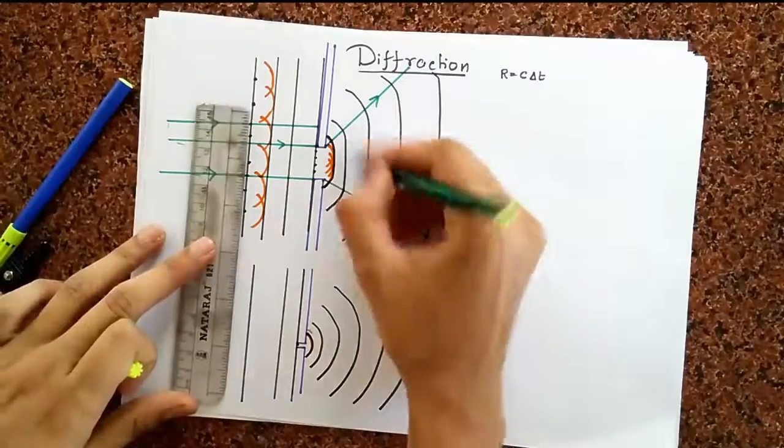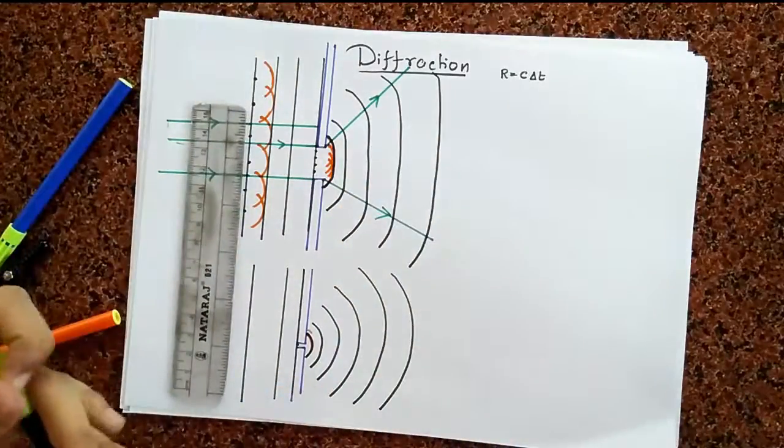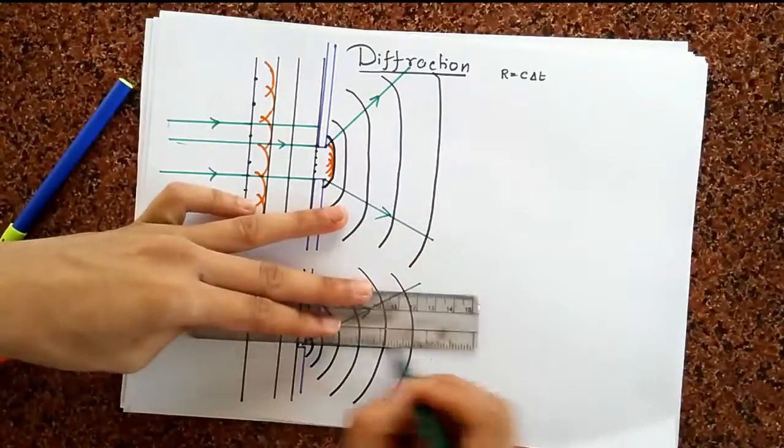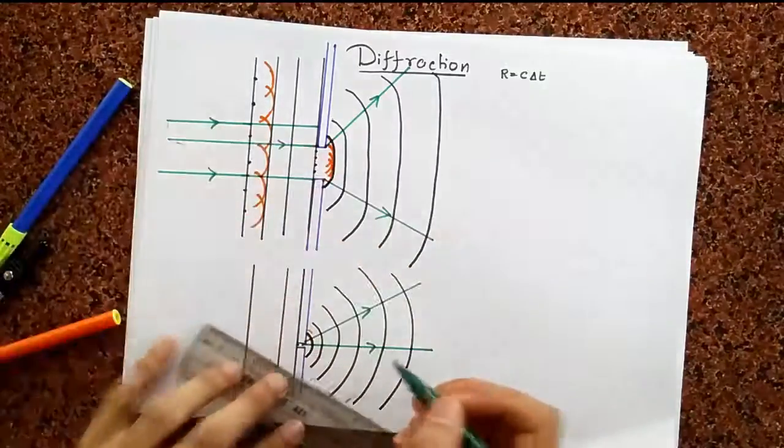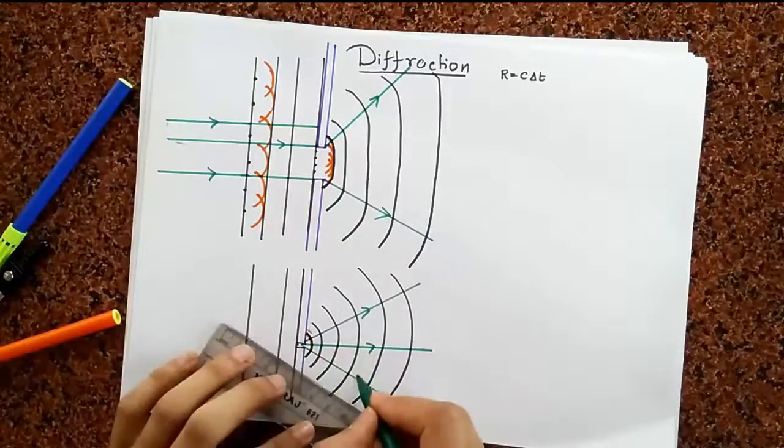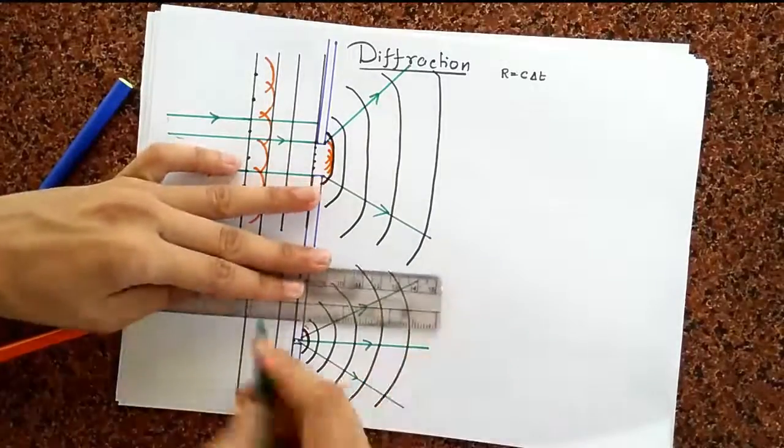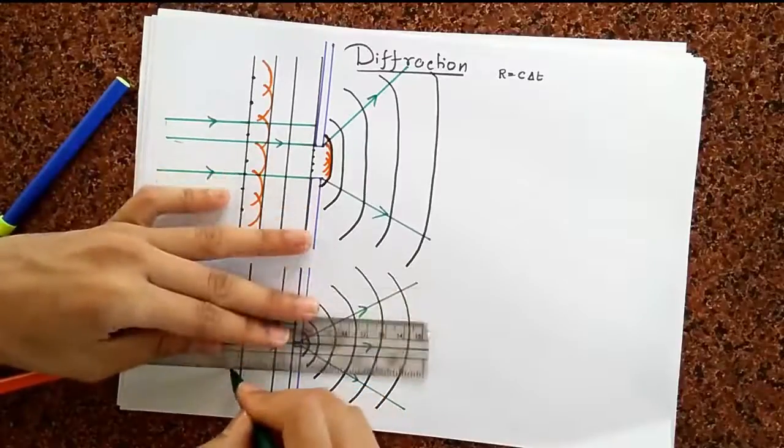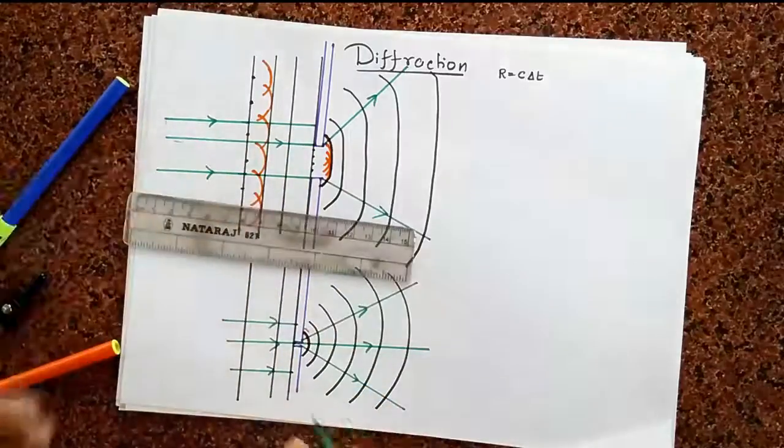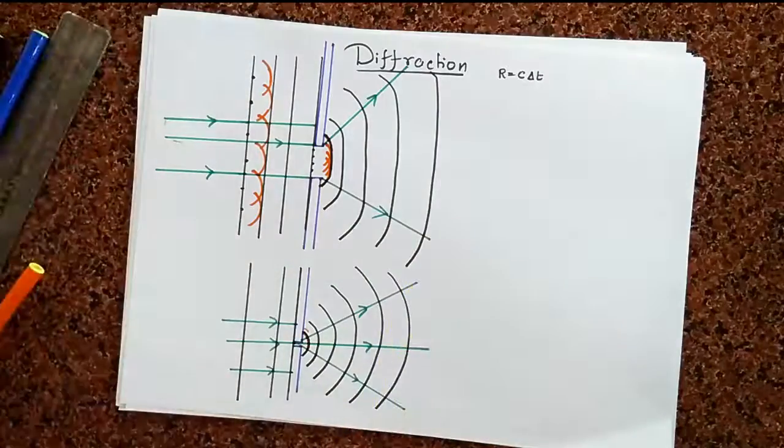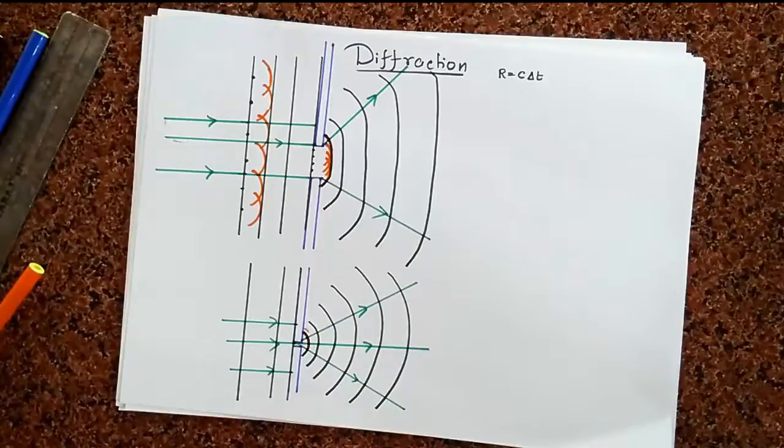Of course, you can never have a slit which is so small that only one Huygens source survives. That's just an approximation, by the way. So we can basically say that as the slit size approaches zero, the wave approaches perfect spherical waves. That is the amazing idea behind diffraction. So diffraction can only be explained by using the wave model. And if light is a wave, well, then light should obey diffraction.